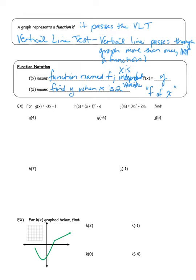When we say f(2), that means find y when x is 2 — it's a shortcut. So g(4) means go to the function called g and replace all the x's with 4. That gives us negative three times four minus one. Following order of operations (PEMDAS), we do the multiplication first: negative three times four is negative 12, then subtract one, giving an answer of negative 13. This tells us that when x is 4, y is negative 13.